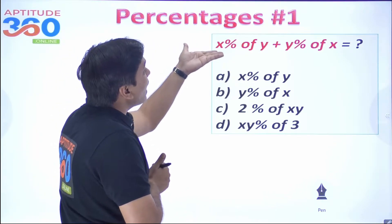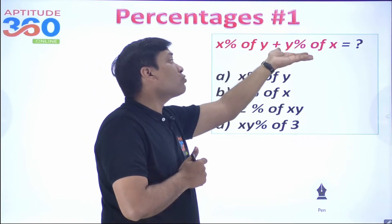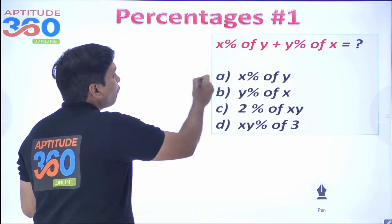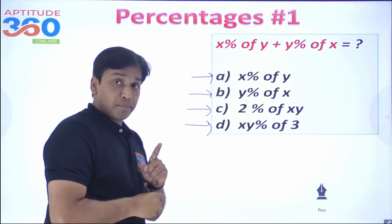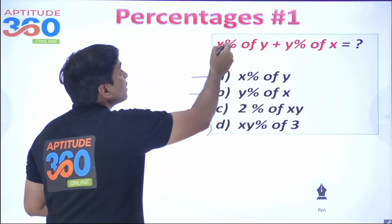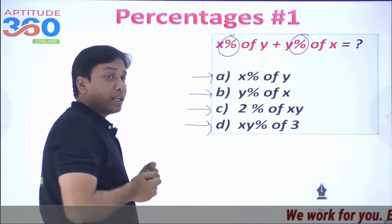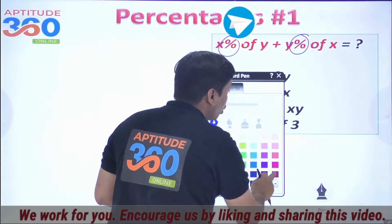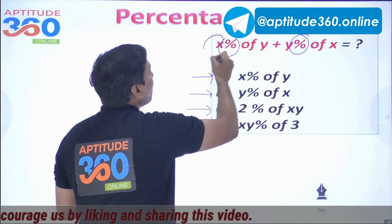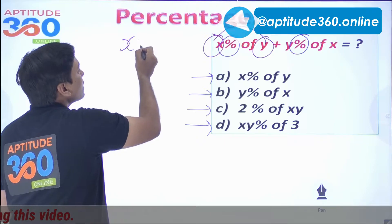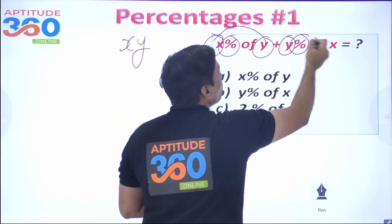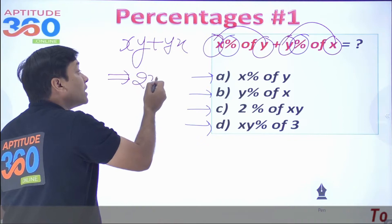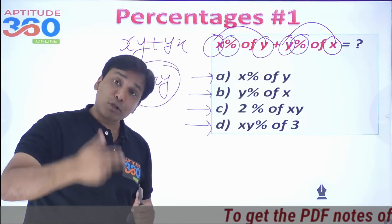The next question is: x percent of y plus y percent of x is equal to what? There are four options and I'm not going to pick up my pen based on my understanding. The meaning of percentage here puts 100 in the denominator. And in the numerator, what will we have? We will have x and y. So this product comes out as x into y. And over here y and x multiplied also gives x into y. So in the numerator we should have two times of xy.